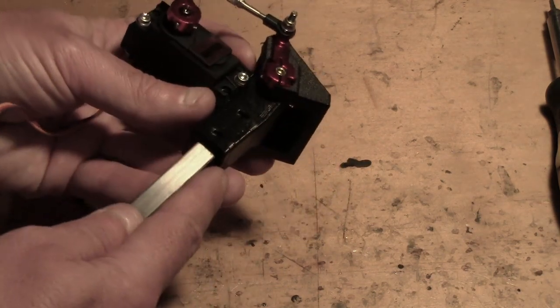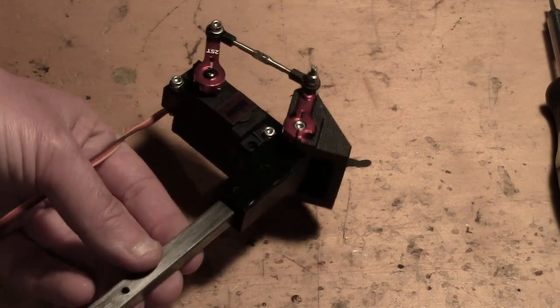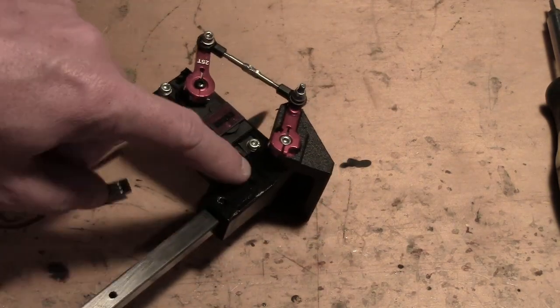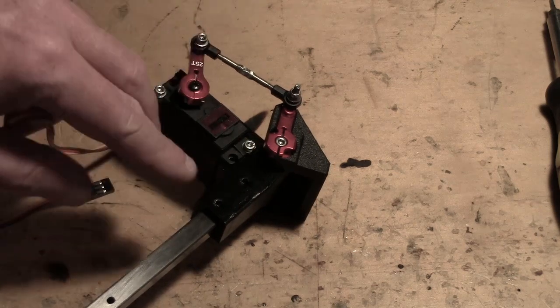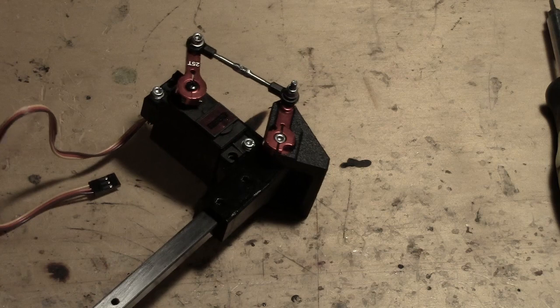Now the whole unit is designed to slide onto a 10 millimeter by 10 millimeter carbon fiber tube and there's a couple of bolt holes here, so once you've got your final position you can drill some holes through there to lock everything in.